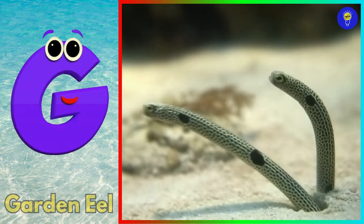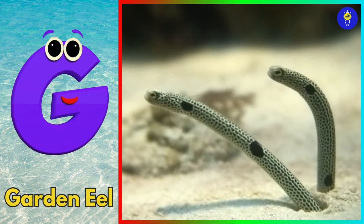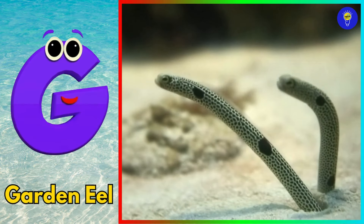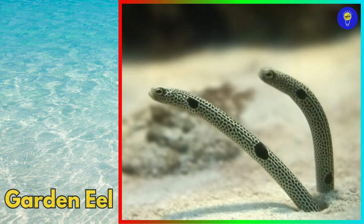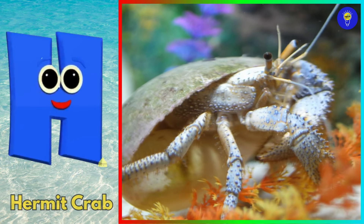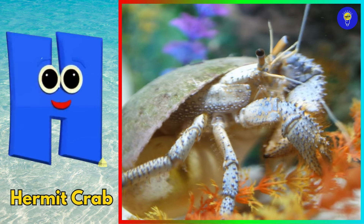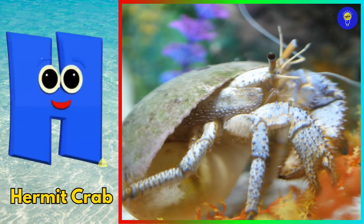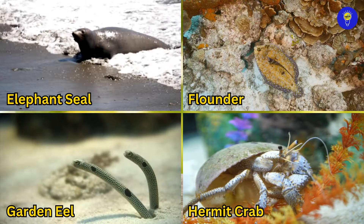G is for garden eel. Guh, guh, garden eel. H is for hermit crab. Ha, ha, hermit crab.